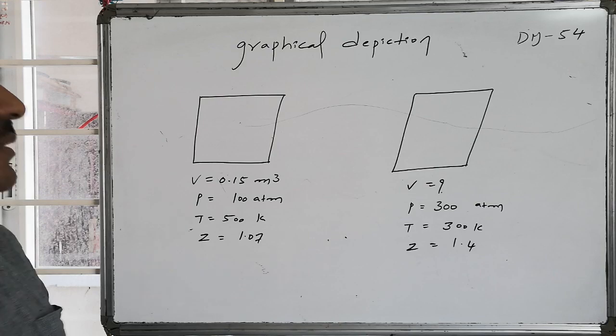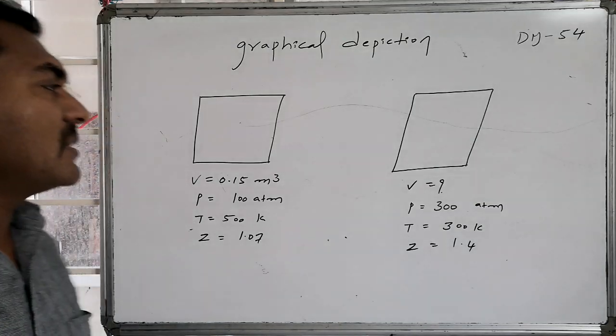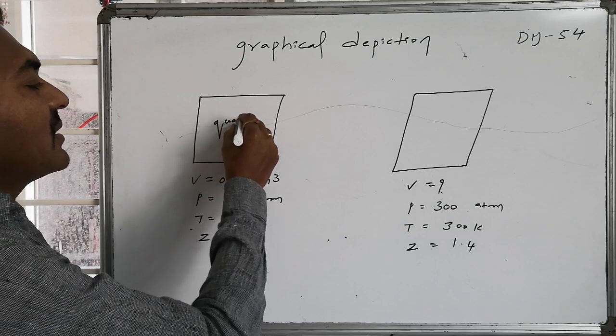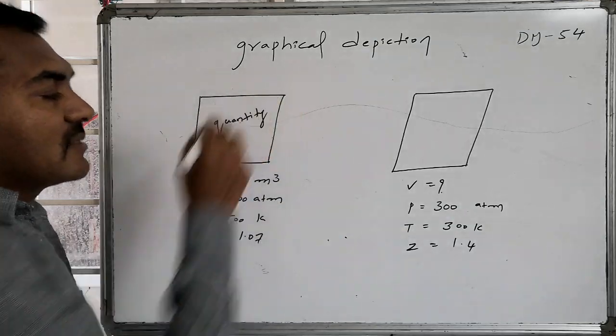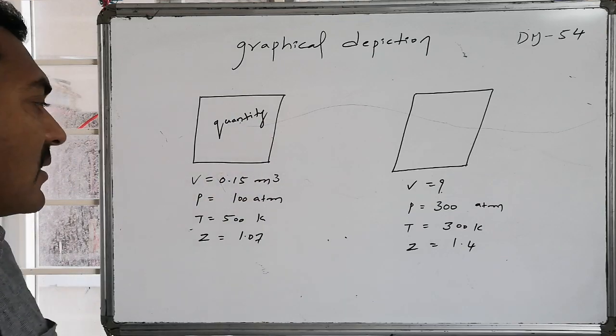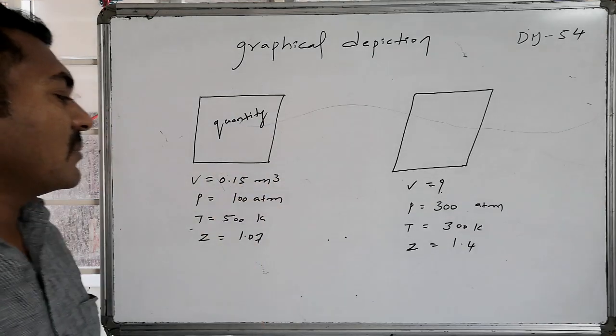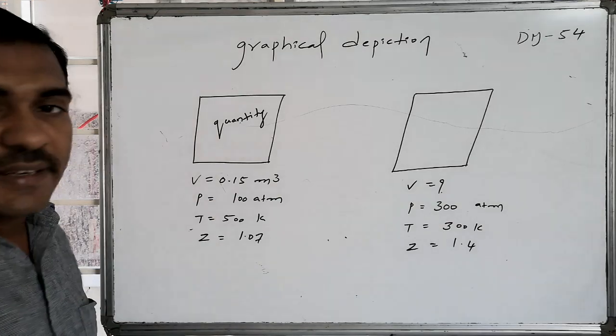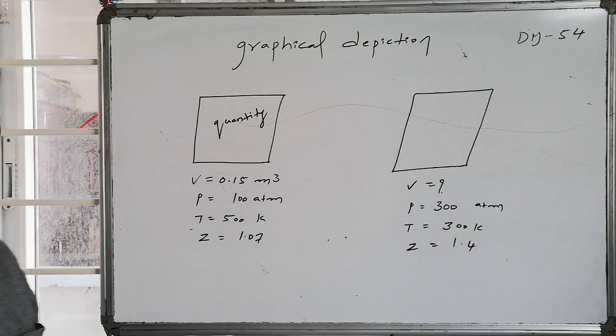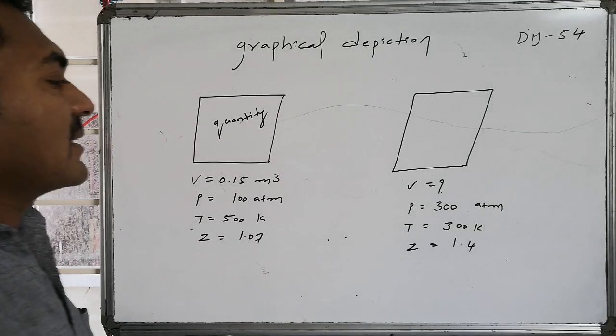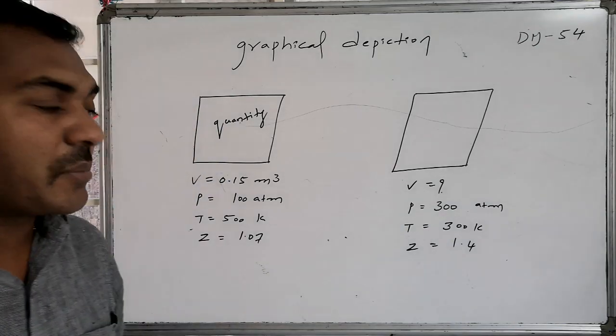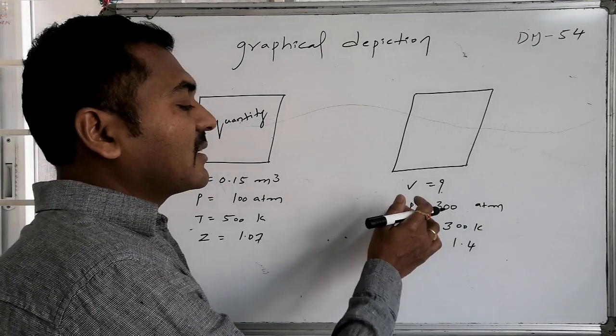The graphical depiction of the given problem: there is a certain quantity of the gas present in the cylinder. The corresponding conditions associated with the cylinder are its volume is 0.15 decimeter cubes, its pressure is 100 atmospheres, and its temperature is 500 kelvin. Its compressibility factor is 1.07. The same gas, if it is adjusted with compressibility factor 1.4, temperature 300, pressure 300 atmospheres, you are asked to calculate the volume.